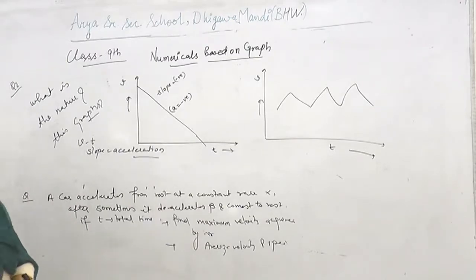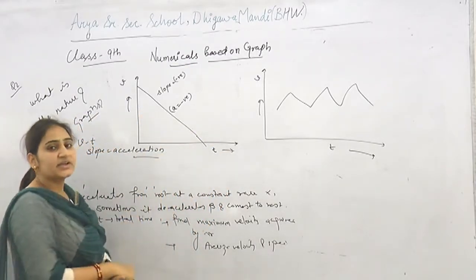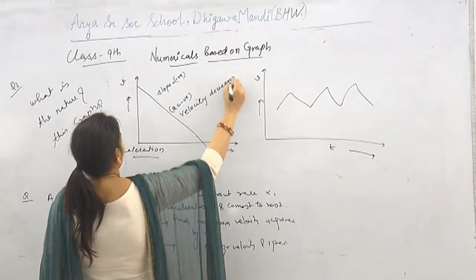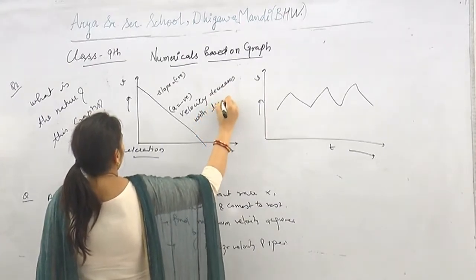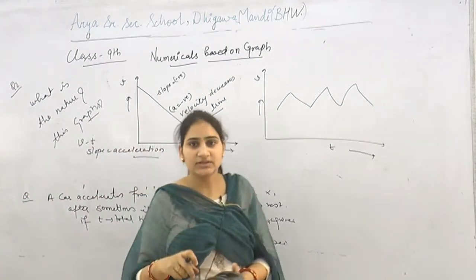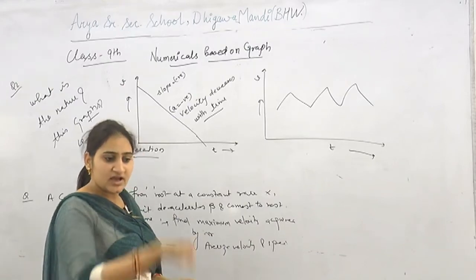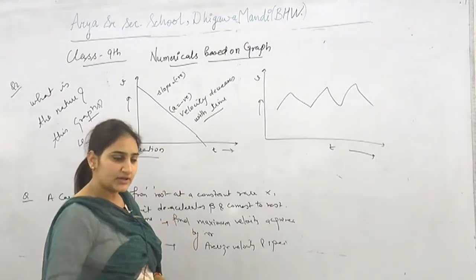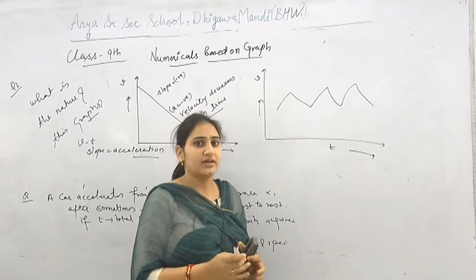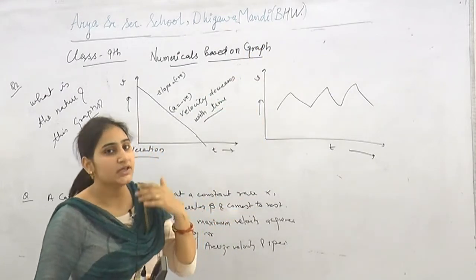The second point is that as time increases, velocity decreases. The velocity decreases with time. For example, consider a ball thrown upward — as it goes against gravity, its speed reduces and at one point becomes zero.